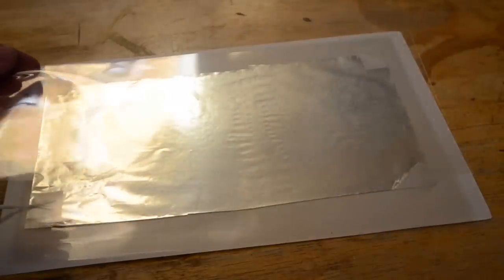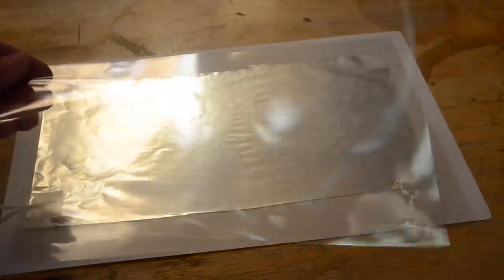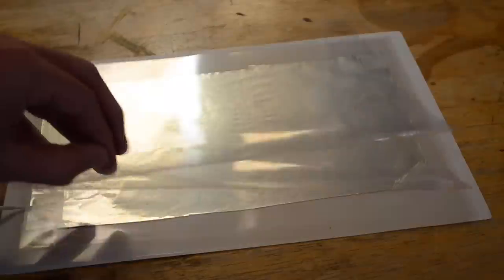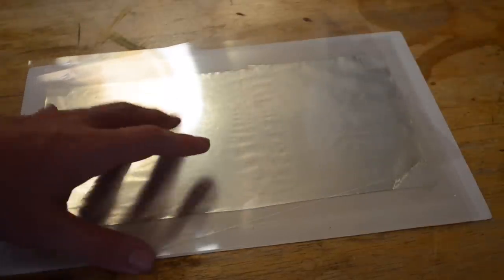Now depending on how many sheets you add on top of this before putting on the next plate will determine the voltage rating of your capacitor. For me, I'm just going to add on these two sheets atop of this.